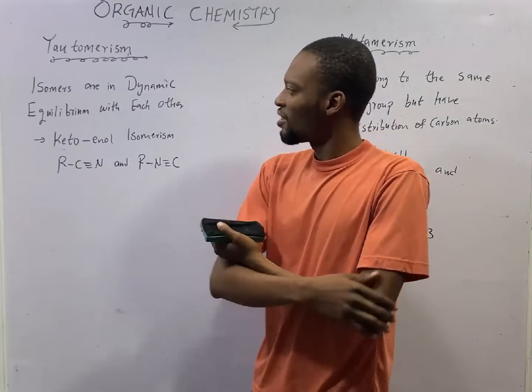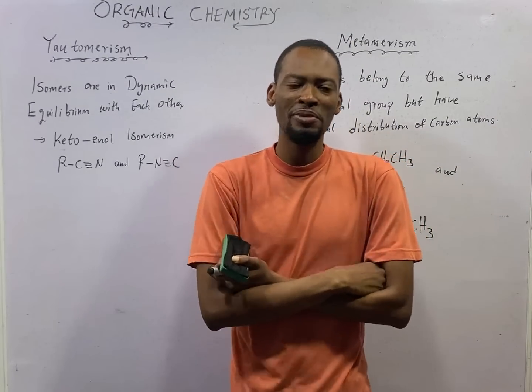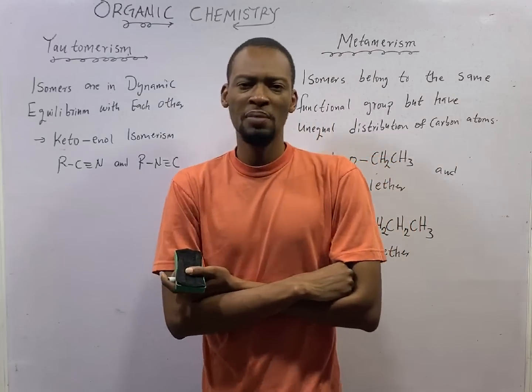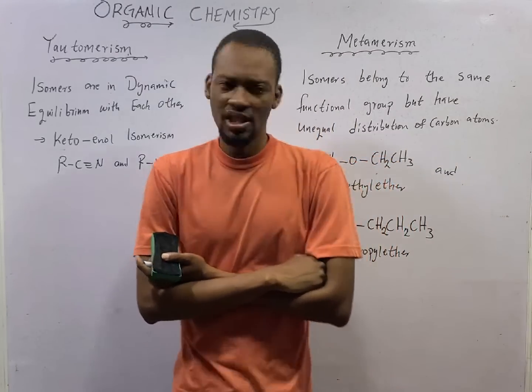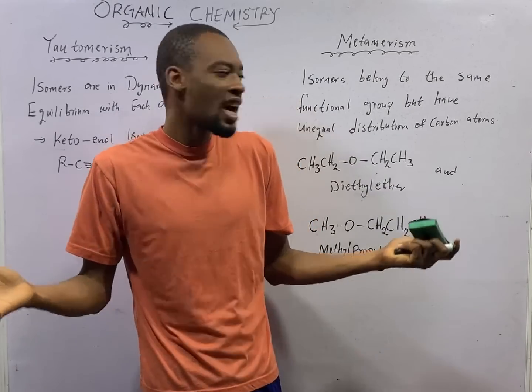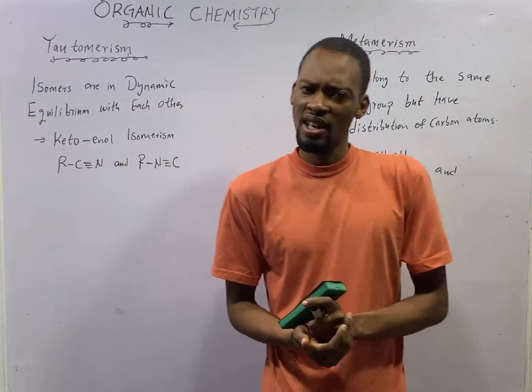This is episode number 95 of the 120 days to JAMB chemistry with Flash Isaac. In this episode, we shall be looking at Tautomerism and Metamerism. These are types of structural isomerism.